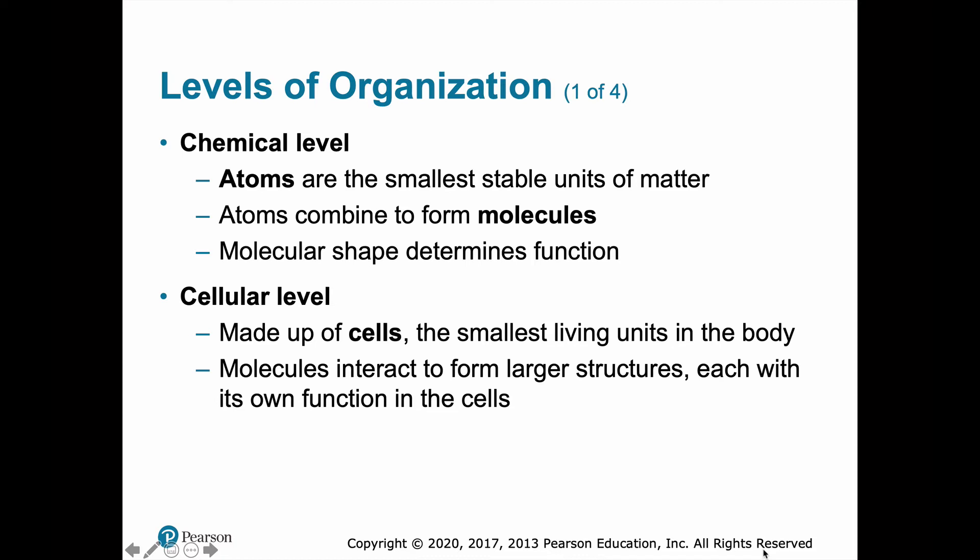Organisms made of eukaryotic cells include things in the kingdom Protista, the kingdom Fungi, the kingdom Plantae, and the kingdom Animalia. We are in the kingdom Animalia, so our cells are eukaryotic cells. At the cellular level, the building blocks of a human are our cells. There are about 206 types of cells and four classes or tissue types, which we're going to talk about very shortly.